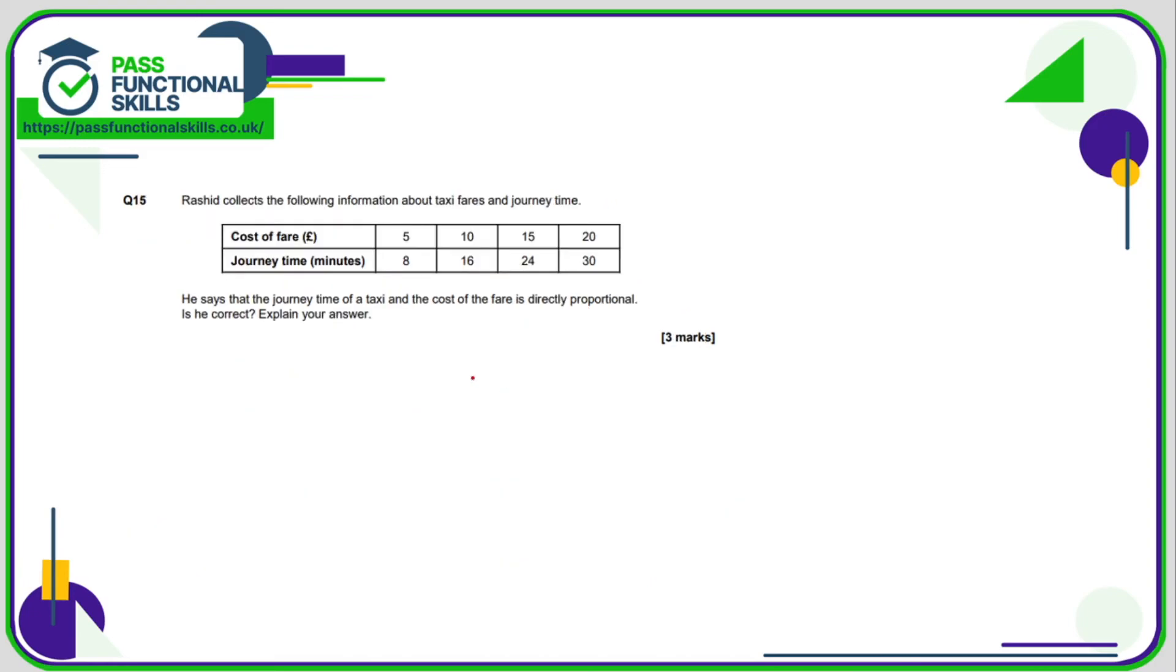Question number 15. Is the journey time directly proportional to the cost of the fare? We can see that five to 10 we're doubling, eight to 16 is doubling. Five to 15 we are tripling, eight times three is 24, that's also tripling. Five to 20 we're multiplying by four, but eight times four is 32. If it was directly proportional, this would be 32 not 30. The fact that it's 30 tells us that no, the journey time and the cost of the fare is not directly proportional.